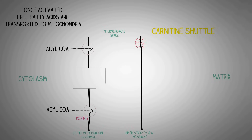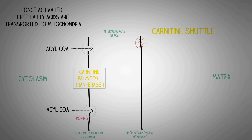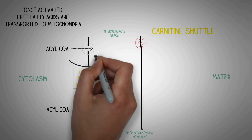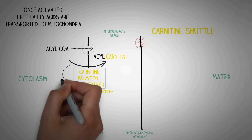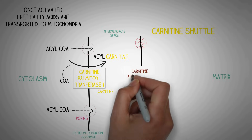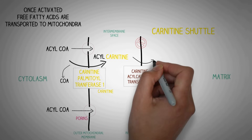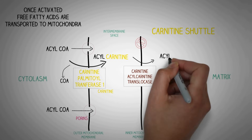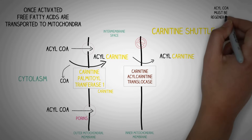The carnitine shuttle contains many enzymes, one of which is carnitine palmitoyl transferase 1 (CPT1), located in the outer mitochondrial membrane. CPT1 attaches a molecule of carnitine to acyl-CoA; in this reaction, the coenzyme A of acyl-CoA is released back into the cytoplasm and a molecule of acyl-carnitine is generated in the intermembrane space. In the next step, the enzyme carnitine acyl-carnitine translocase, located on the inner mitochondrial membrane, transports this acyl-carnitine into the matrix of the mitochondria.